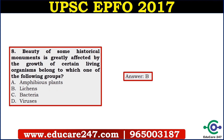The next question is: the beauty of some historical monuments is greatly affected by the growth of certain living organisms belonging to which one of the following groups? You have to identify the group of organisms that impacts monuments. You must have seen the green-colored growth on many old monuments — that impacts the monuments. Here the answer is B, lichen.